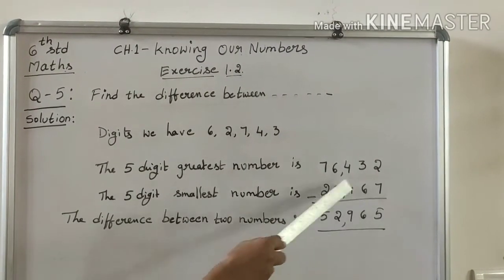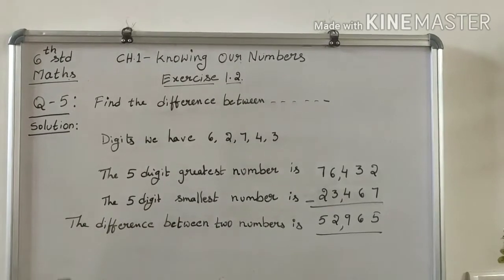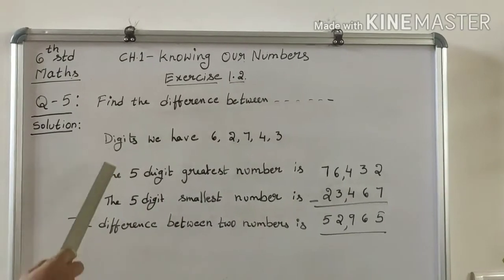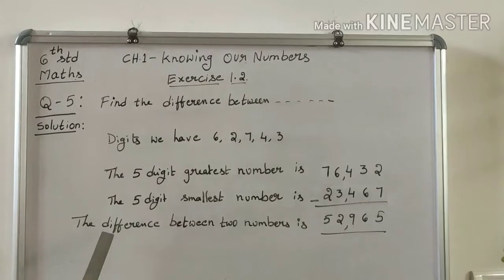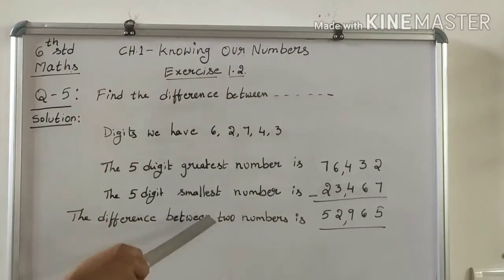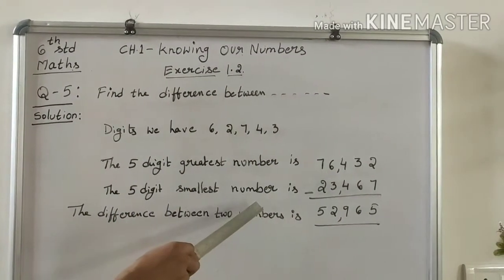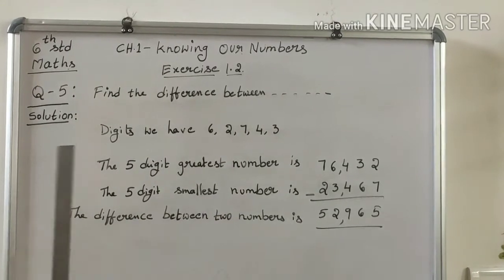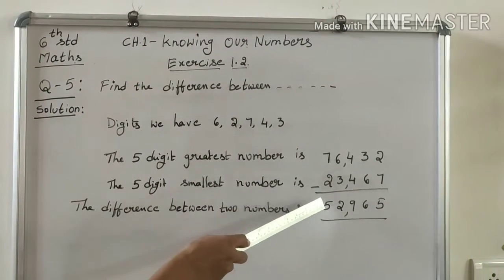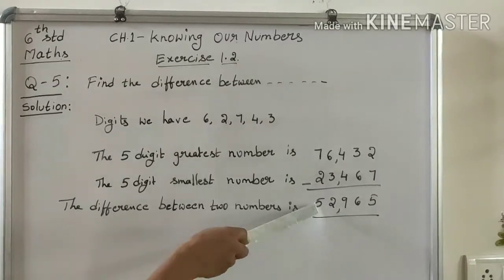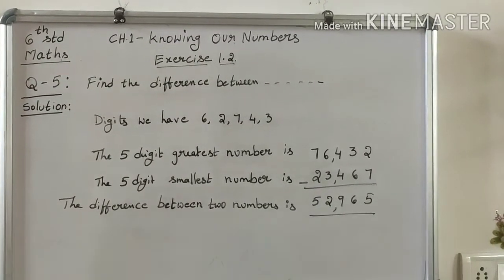After writing this, we get the smallest number of 5 digits. Here we have to find the difference between these two numbers — the greatest number and the smallest number. After subtraction, we get 52,965.